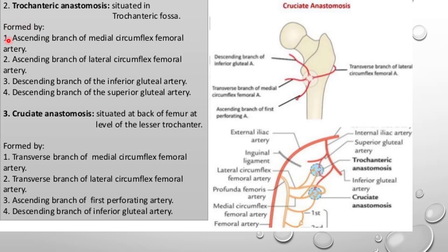The first two arteries forming the trochanteric anastomosis are the ascending branch of the medial circumflex femoral artery and the ascending branch of the lateral circumflex femoral artery.